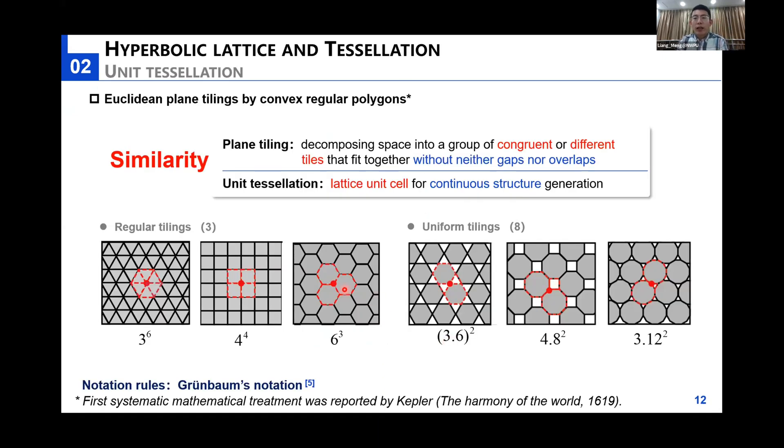Once we have this unit cell design, a patterning strategy is absolutely required. We would like to borrow the concept of Euclidean plane tiling from mathematicians, considering the similarity between plane tiling and unit tessellation. In our work, we have adopted one regular tiling and another uniform tiling. We prefer to omit their definitions here for simplicity's sake. In any case, we focus only on these two tilings where hexagonal units are both involved.